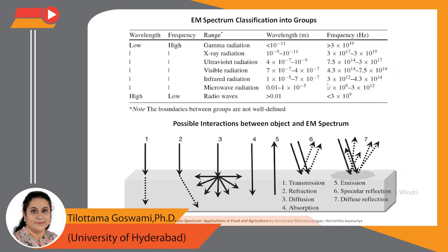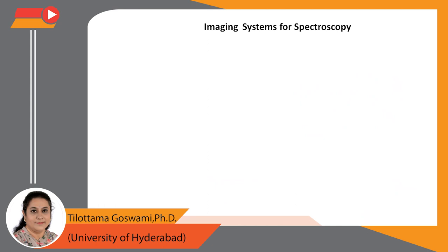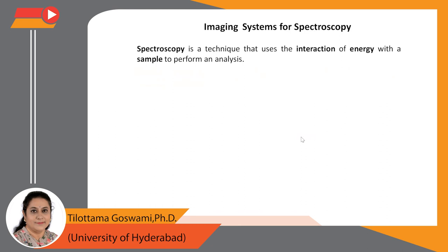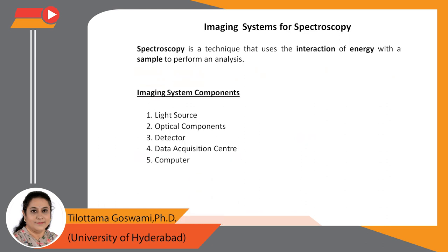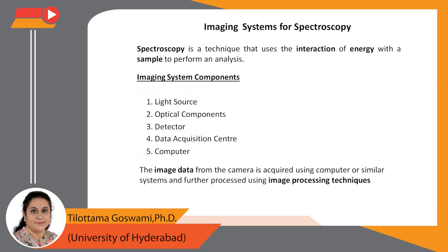The imaging systems used in any spectroscopic technique require a few basic instrumentation components. The key components are: light source, optical components, detector, data acquisition center, and computer. Most of this imaging is performed in controlled environment conditions, and components may vary with the spectroscopic technique and the type of application. The image data captured is used for further processing and data interpretation using image processing techniques.